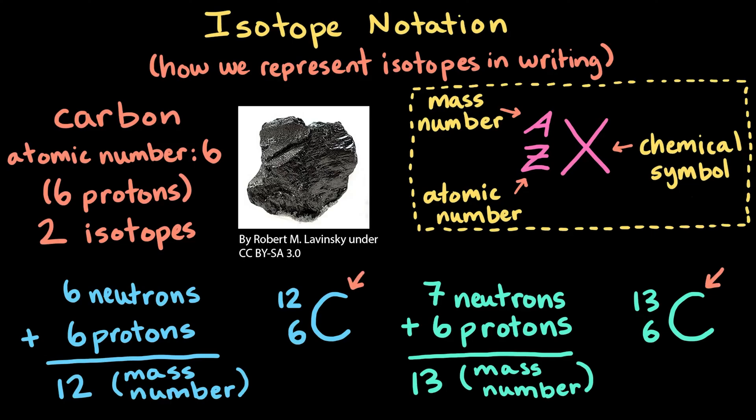Notice that the chemical symbol and atomic number share the same information — the identity of the element — and are the same for both isotopes. But the mass number is different for each isotope depending on the number of neutrons.